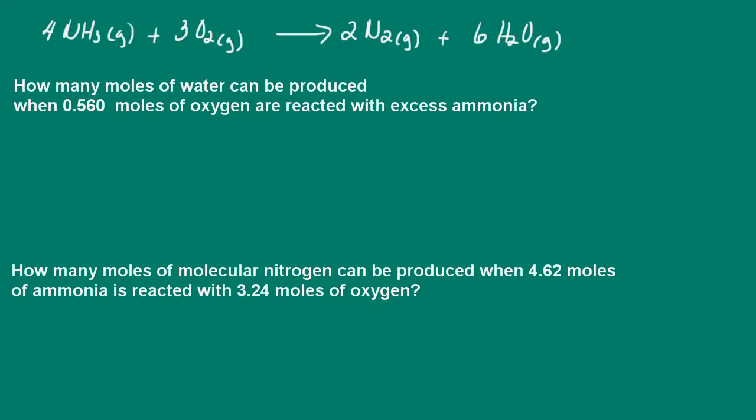Here we have the reaction between ammonia and oxygen to produce molecular nitrogen and water. Notice I do have a balanced chemical equation, so always check to make sure that your equations are balanced.